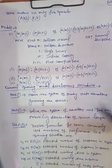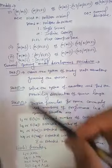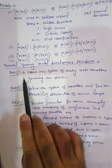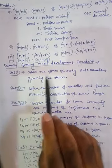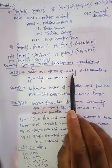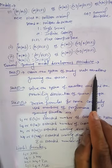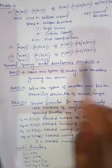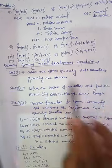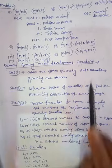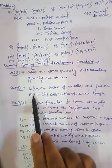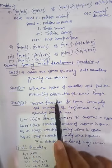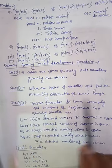Now, how to solve the model — this is the stepwise procedure. Step one: obtain the system of steady state equations governing the queuing system. So first we will develop the steady state equations. Then in step two, solve the system of equations and find the probability distribution of queue length.